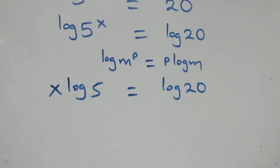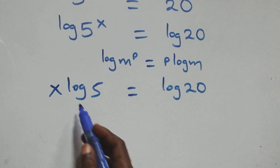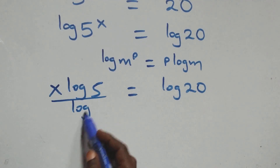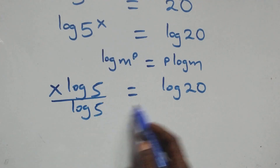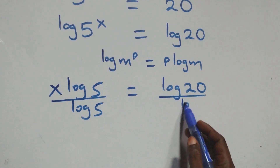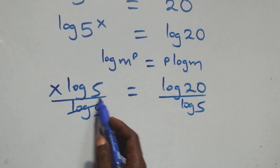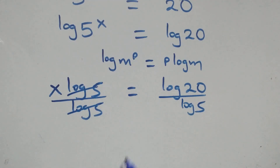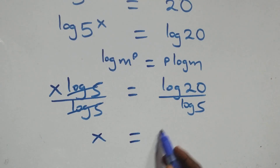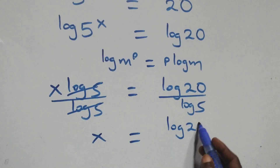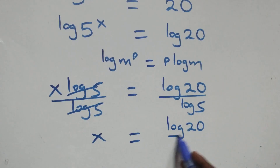Divide both sides by log 5 — divide this side by log 5, also divide this side by log 5. The log 5s cancel each other and we have x equals to log 20 over log 5.